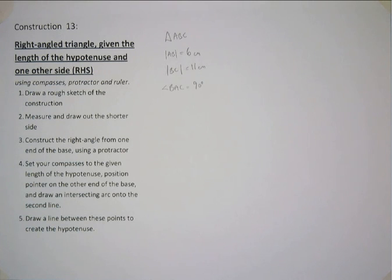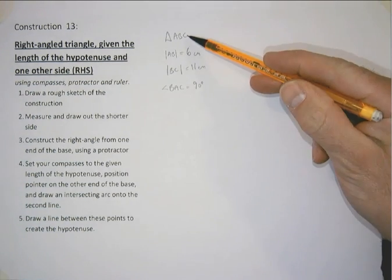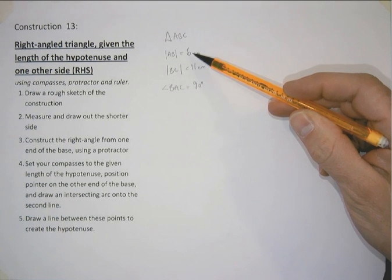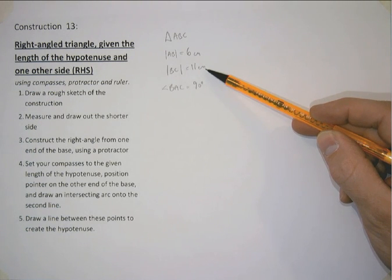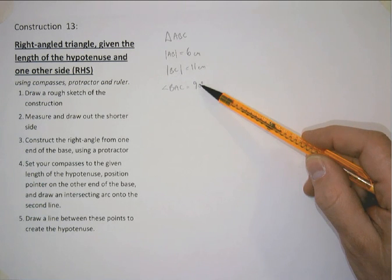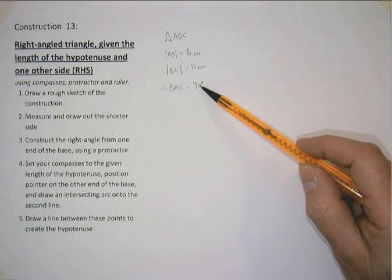First thing we need to do is visualize what we are looking at. So we have a triangle called ABC where we have one side AB which is 6cm and another side BC which is 11cm. And the angle opposite that side, angle BAC is 90 degrees.